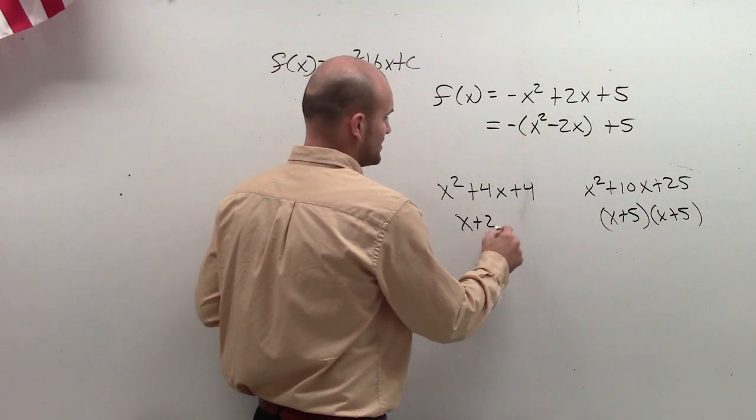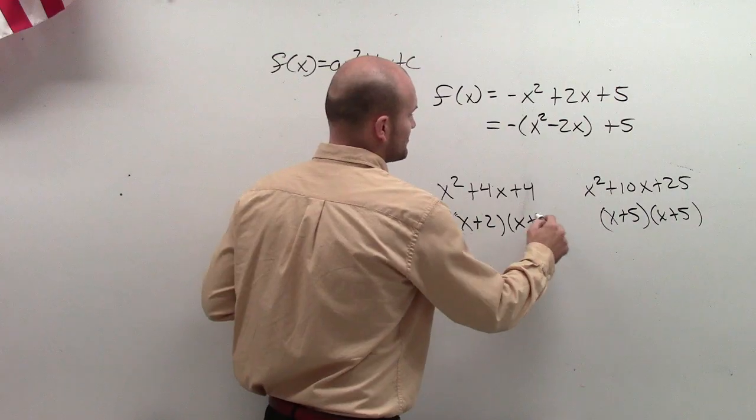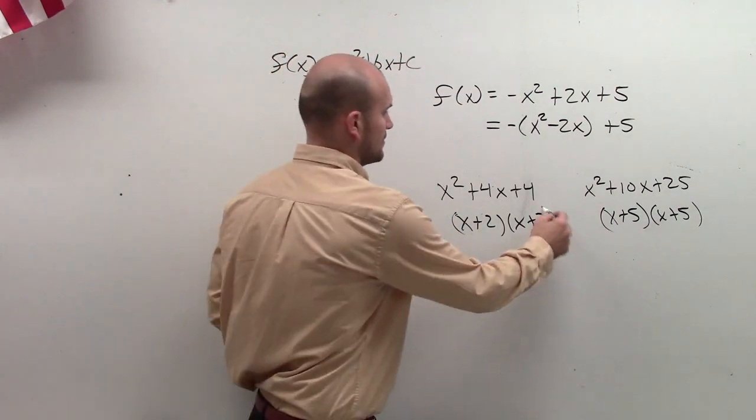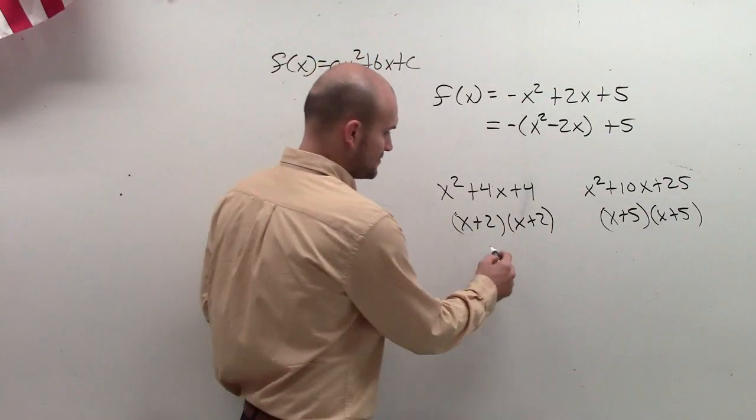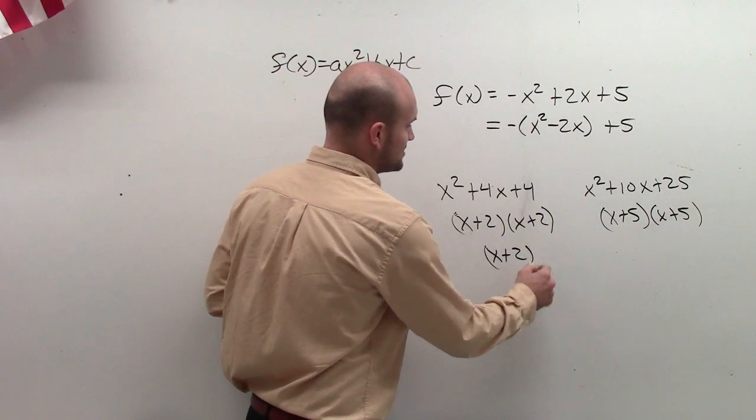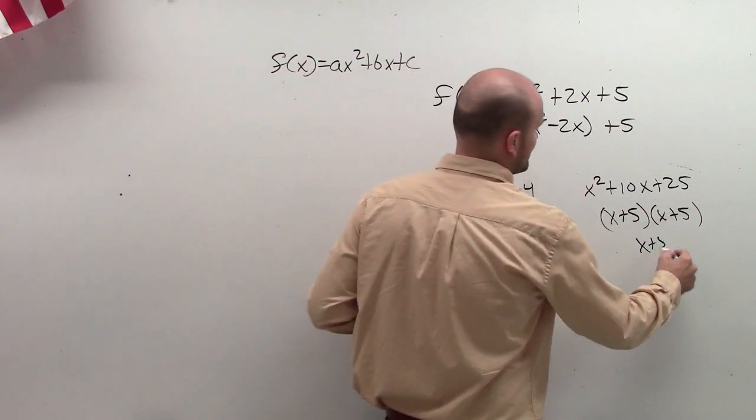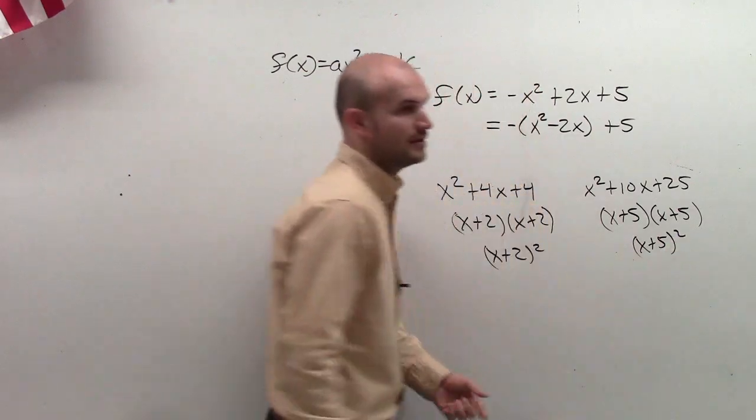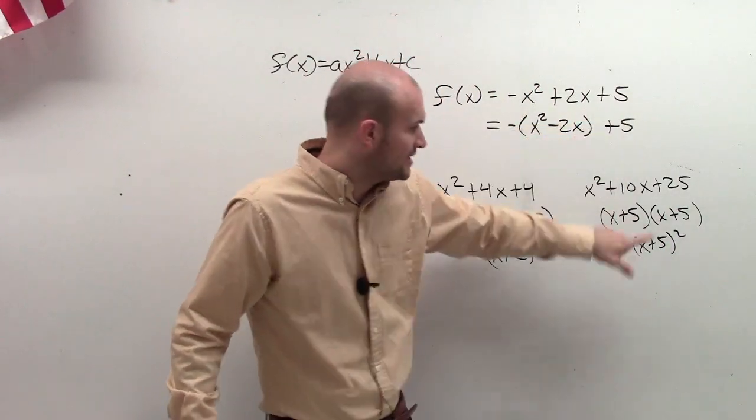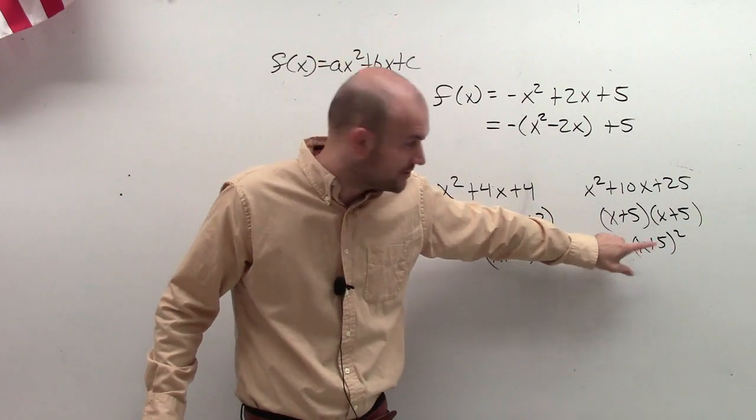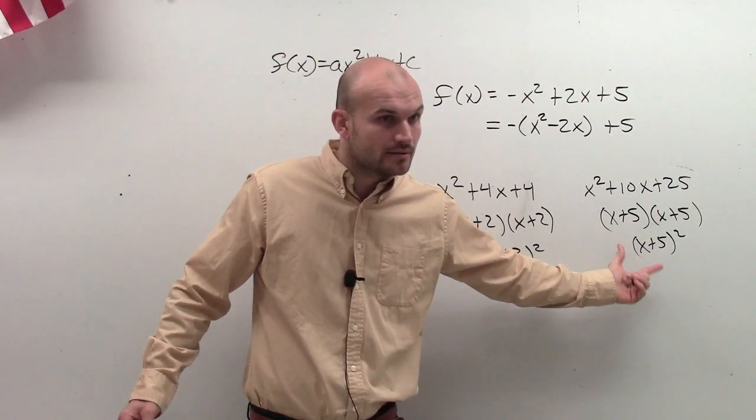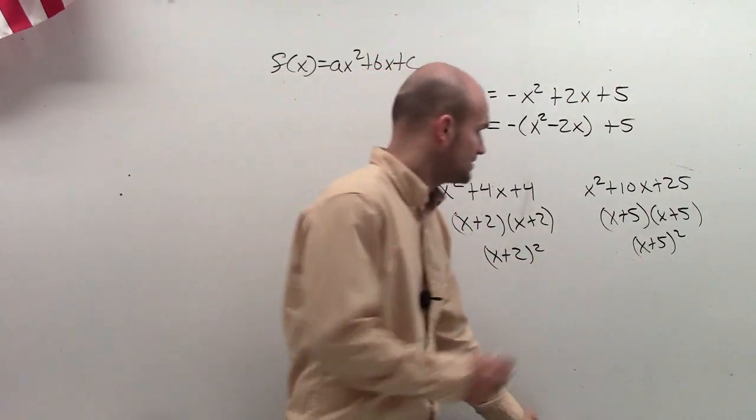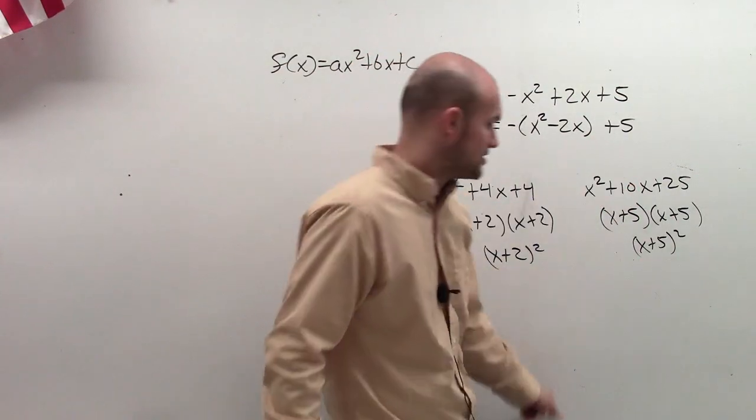This one is (x + 2)(x + 2). What you notice is this is the same thing multiplied by itself. So we can just rewrite it as (x + 2)² or (x + 5)². That's why it's so important to have a perfect square trinomial, because we can rewrite it, we can factor it as (x + 5)². Or we can rewrite it as a binomial squared. That's why we want to get a perfect square trinomial.